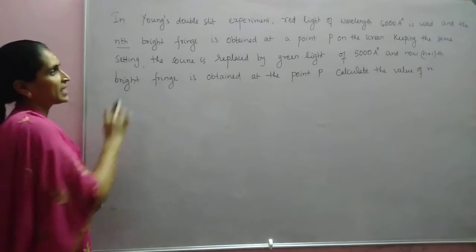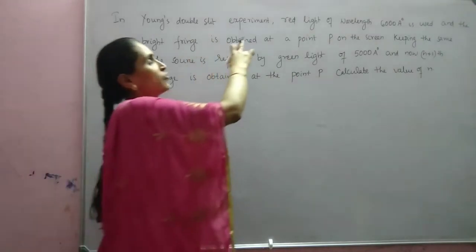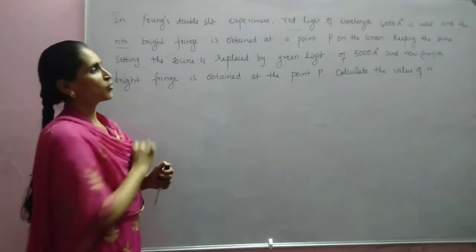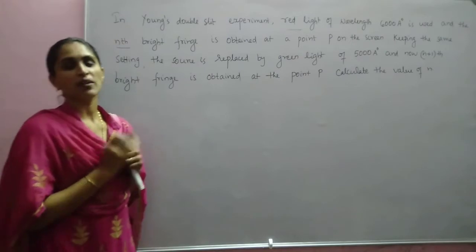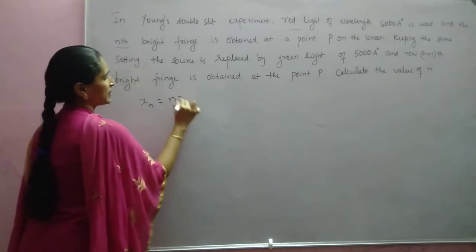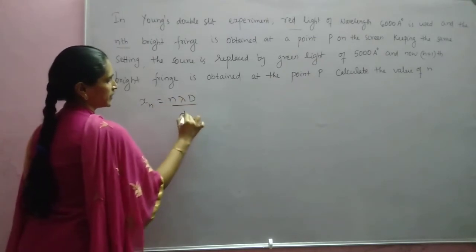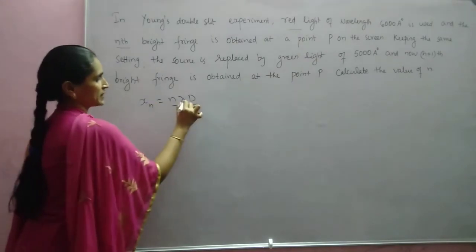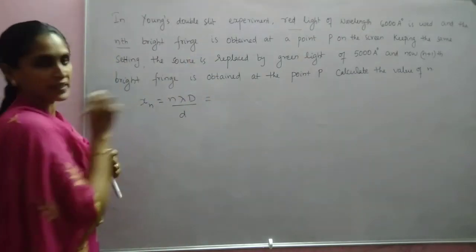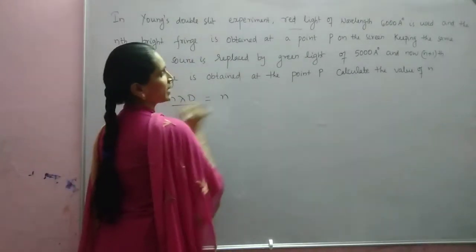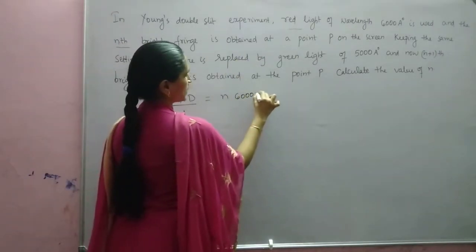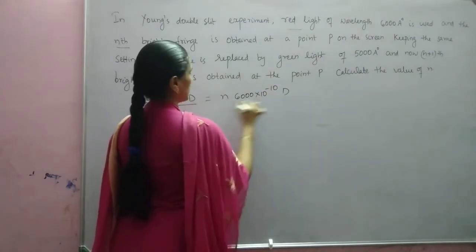The nth maximum for red light and the (n+1)th maximum for green light are coinciding. The expression for the nth maximum is x_n = n·lambda·D/d. For red color: x_n = n × 6000×10⁻¹⁰ × D/d. We have to find the value of n.